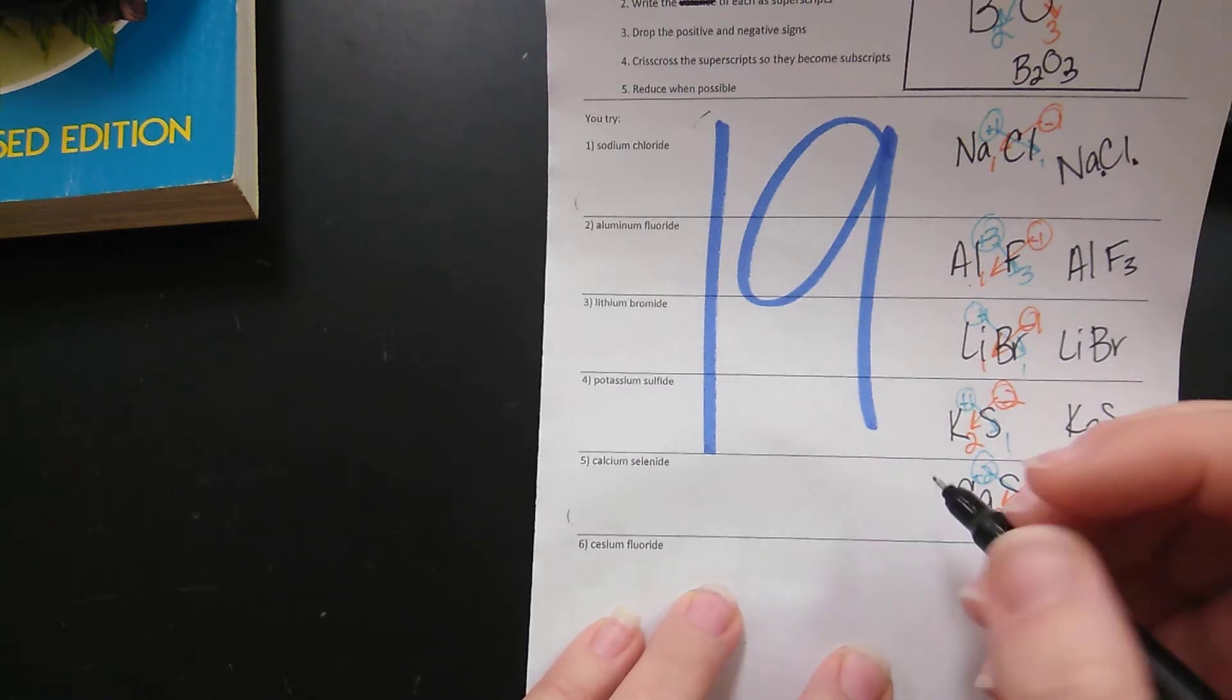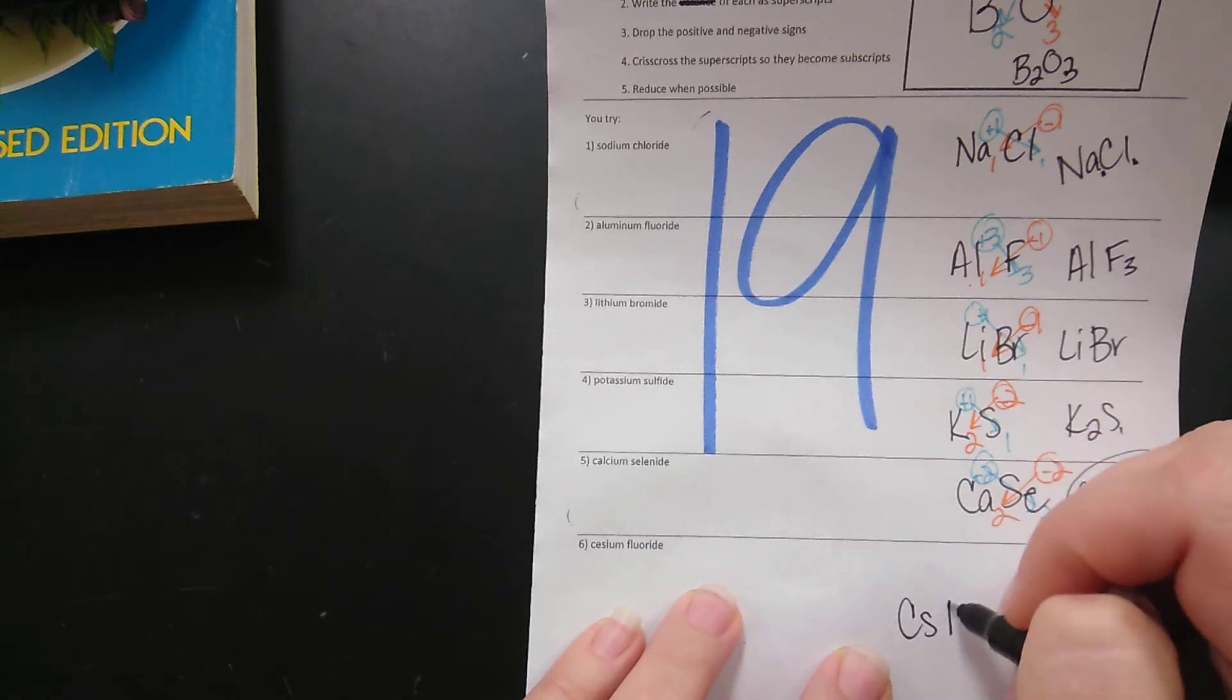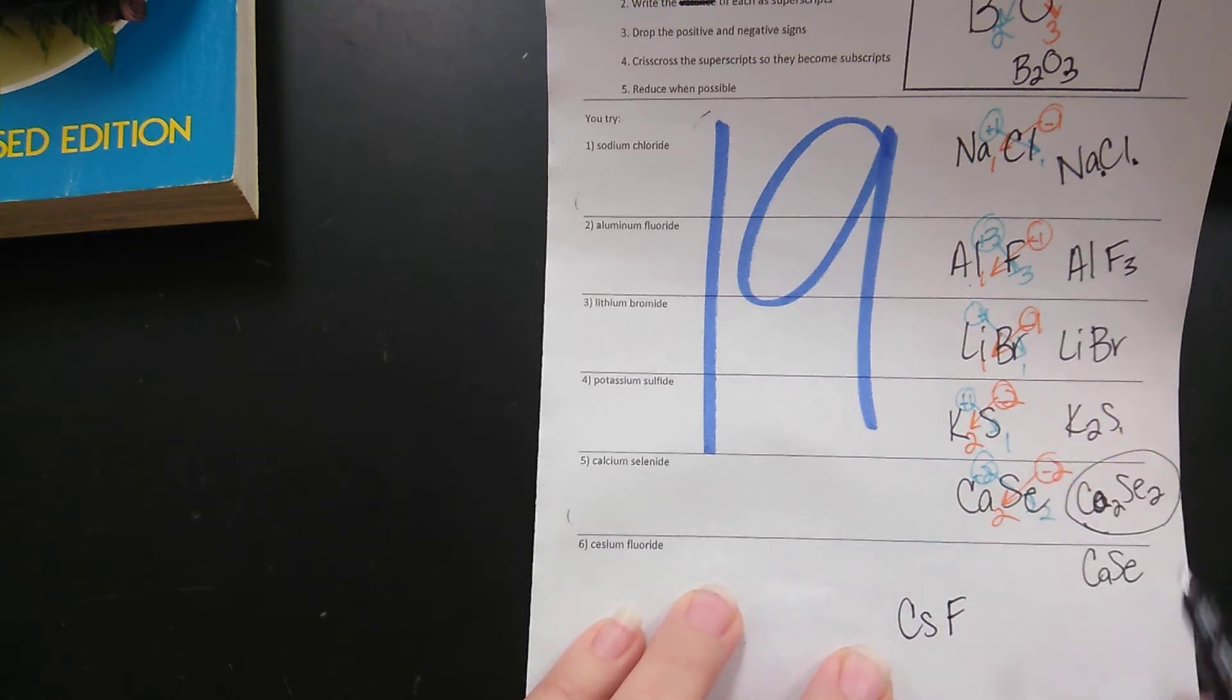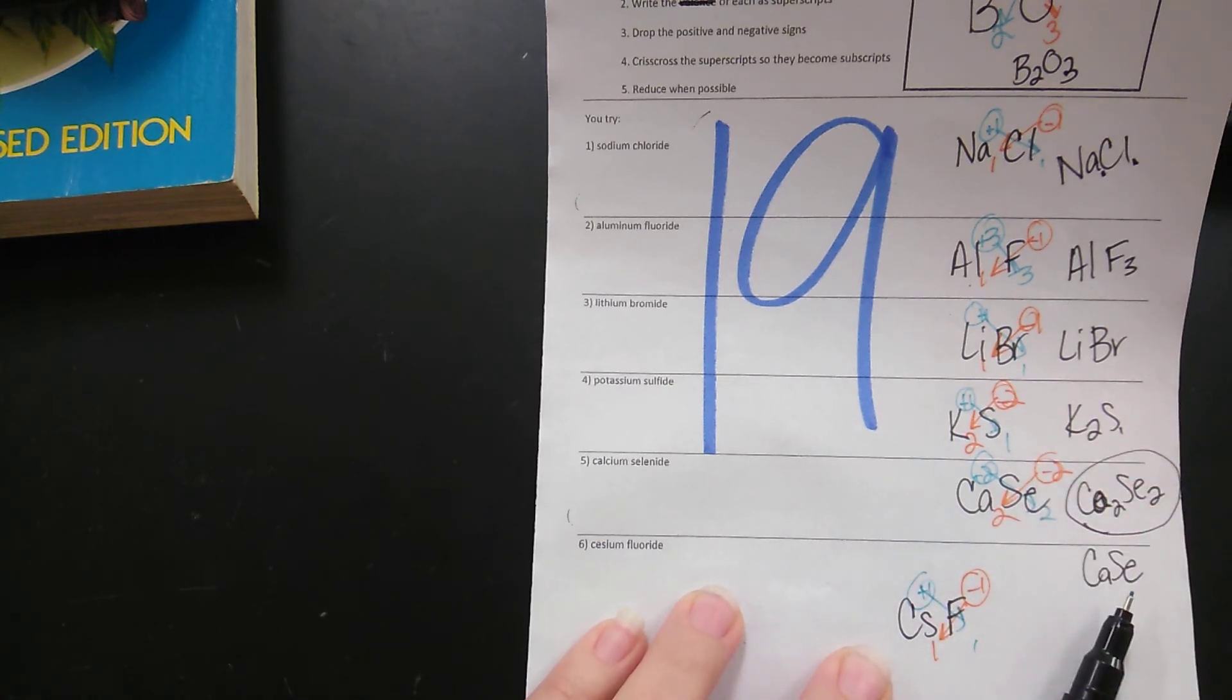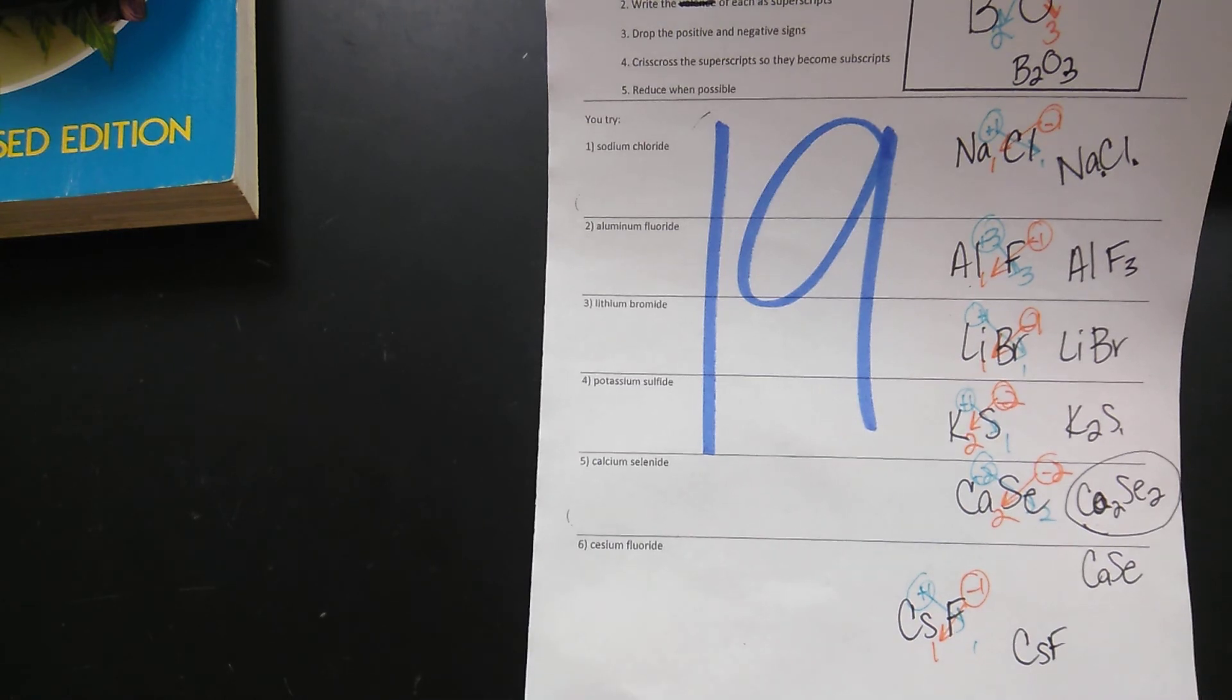Next we have cesium and fluorine so Cs and fluorine is F, cesium is in group one, has a positive one charge. Fluorine is in group seven, negative one. Crisscross. When they react they do so at a one to one ratio and that's what we have and we're going to do more practice tomorrow.